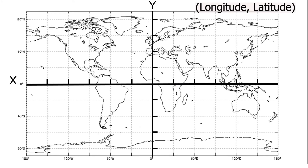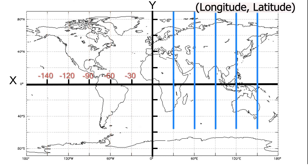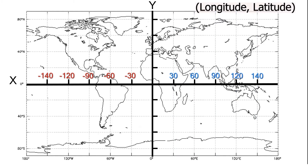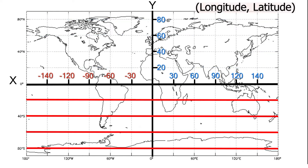X values, or longitude lines, are negative to the left of the zero degree mark and positive to the right of the zero degree mark. Similarly, the Y values, or latitude lines, are positive north of the zero degree mark, while the Y values are negative south of the zero degree mark.